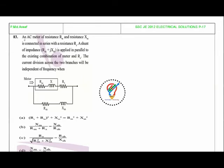Next question: An AC meter of resistance Rm and inductance Xm is connected in series with resistance Rs. The shunt impedance of Rsh plus jXsh is applied in parallel to the existing combination of meter and Rs. The current division across the two branches will be independent of frequency when: